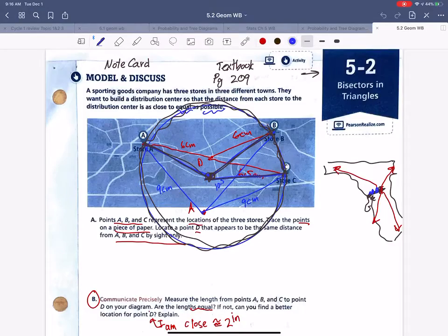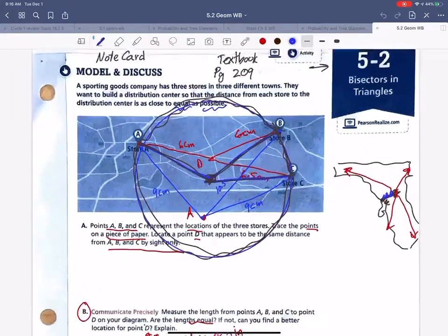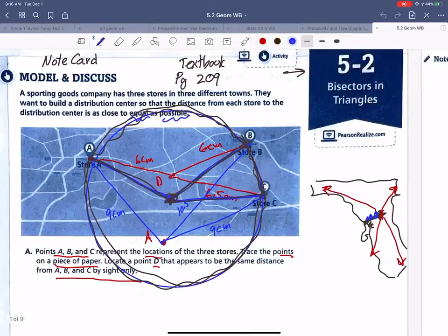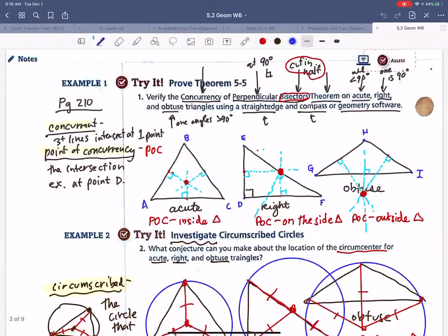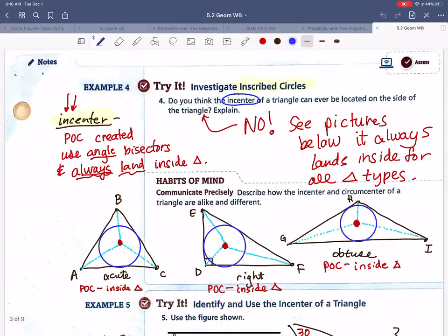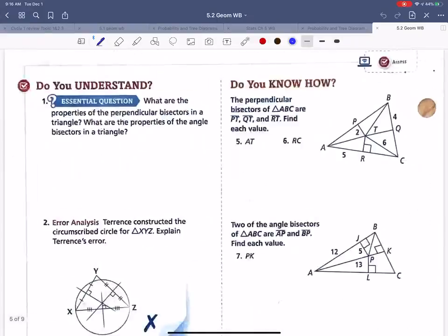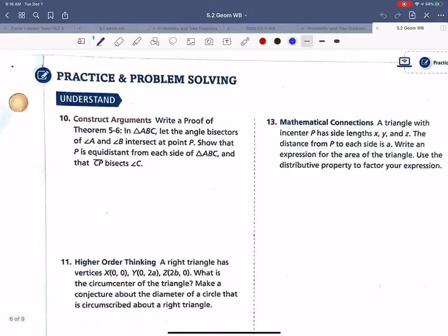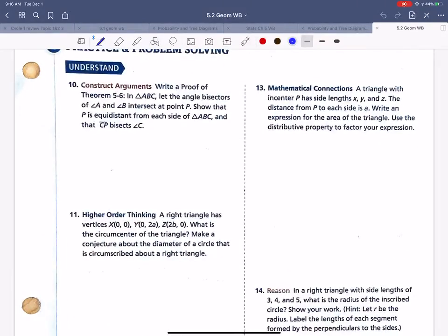Hey guys, we're going to do homework 5-2. So we found centers two ways. We either found the circumcenter or we found the incenter, right? And we did this by either doing perpendicular bisectors or angle bisectors.